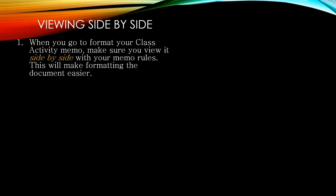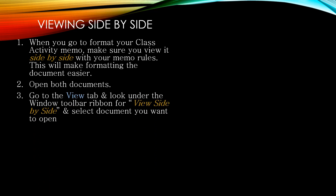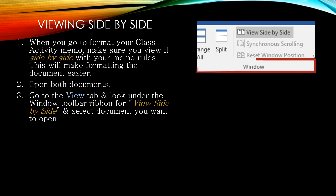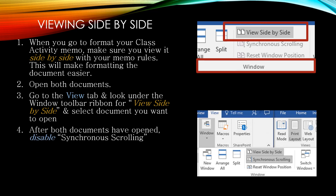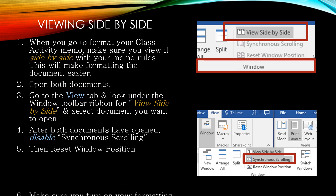Viewing side by side. You can view two documents side by side at the same time. First, you must have both documents you want to view together open simultaneously. Go to the View tab and look under the Window toolbar ribbon for View Side by Side, then select the document you want to open. After both documents have opened, disable the synchronous scrolling, then reset your window position.